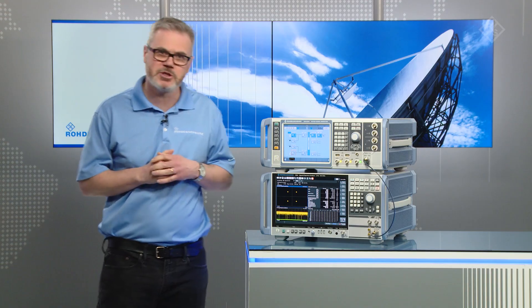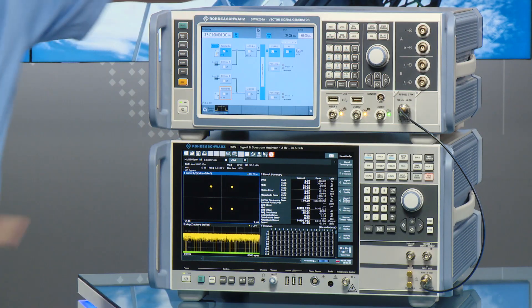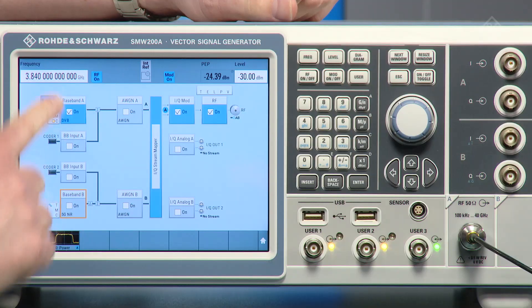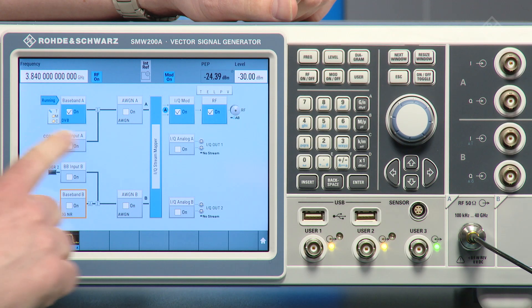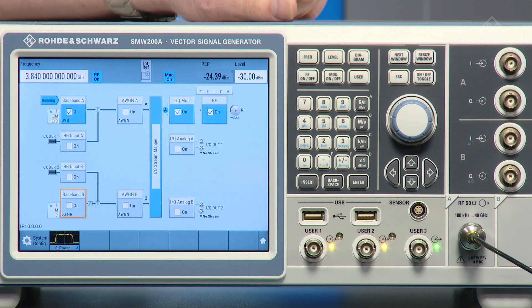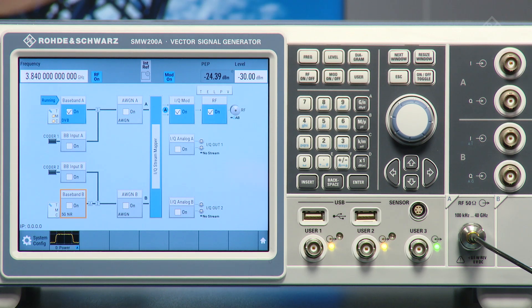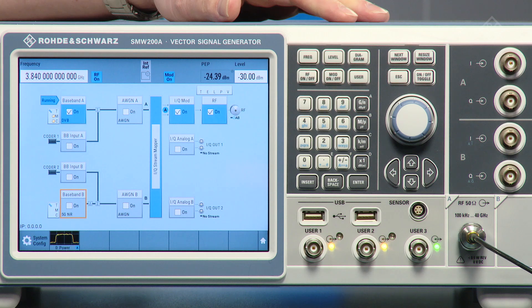Now let's look at the instruments we have here. On the SMW, up at the top here, you see we have two basebands. Right now in baseband A, we've got a DVB-S2S signal and we are transmitting it out on a frequency of 3.84 GHz.